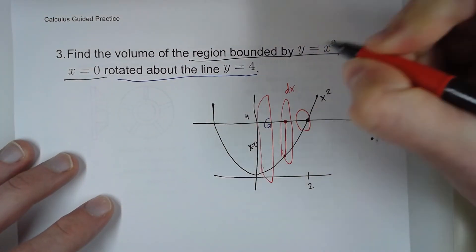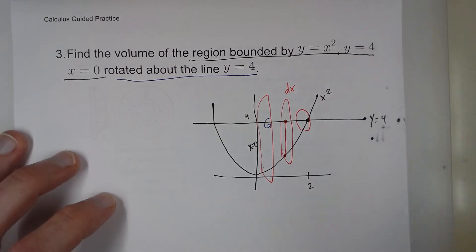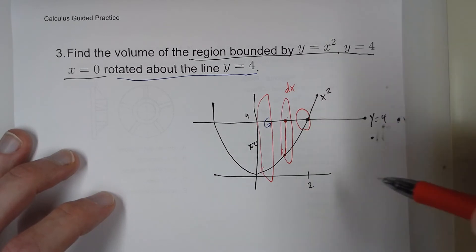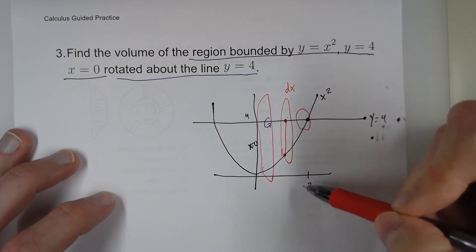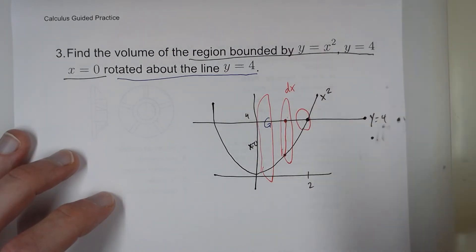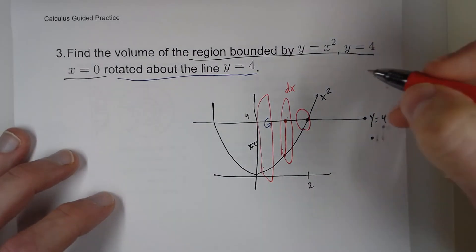Now, our thickness is still dx. Now, how do we get this? It was a little easier because the x-axis, or y equals 0, was one of the boundaries. But here, it's not. And so always what I tell students is I always say, okay, look at each equation.